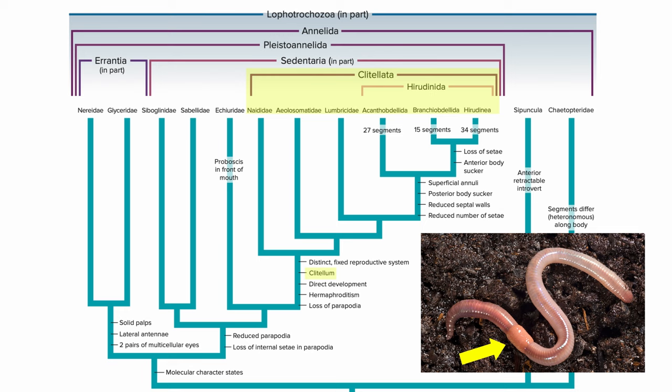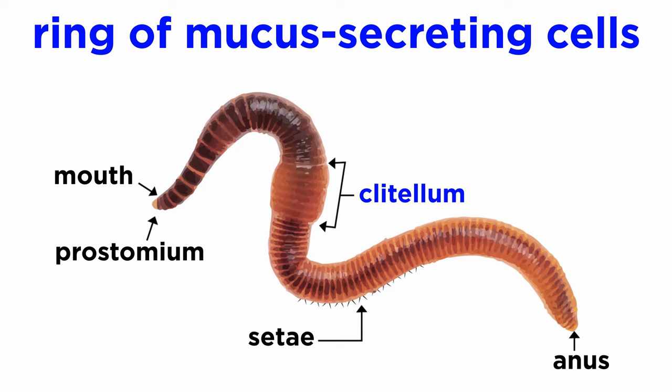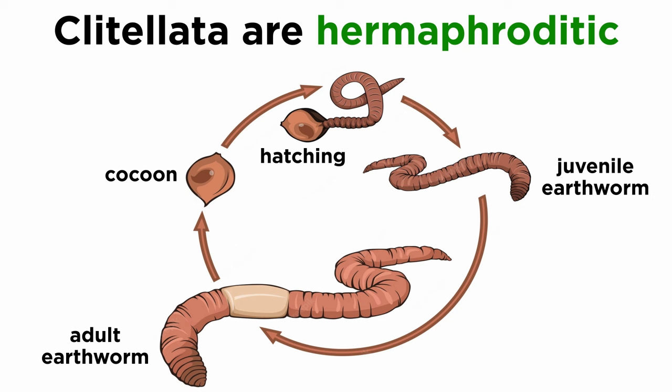The clitellum is a ring of mucous-secreting cells in the epidermis that appears on the worm's exterior as a fat band around the body about one-third of the body length from the anterior end. It superficially resembles a bandage in many species and is always present in earthworms and other oligochaetes. It appears only during the reproductive season in leeches. All members of Clitellata are also hermaphroditic, or monoecious, and young develop inside a cocoon secreted by the clitellum after fertilization.